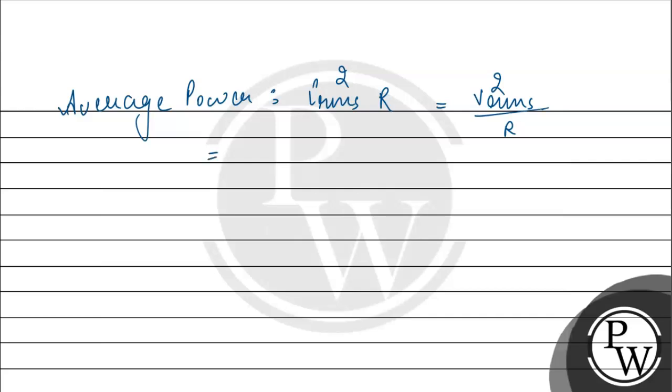Now I_rms equals I₀/√2, so I_rms² equals I₀²/2. Therefore I_rms² × R equals I₀²/2 × R. With I₀ = 10, we get 10²/2 × R, which is 100/2 × R.